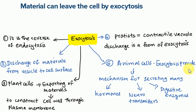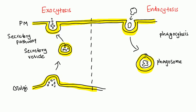In animal cells, exocytosis provides a mechanism for secreting many hormones, neurotransmitters, and digestive enzymes. In this image showing exocytosis and endocytosis, you can see the plasma membrane. The elimination of waste and secretion of Golgi contents into the external environment occurs by the secretory pathway, and the vesicles formed are called secretory vesicles.